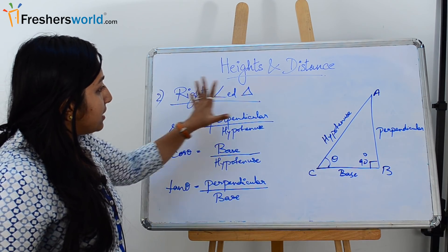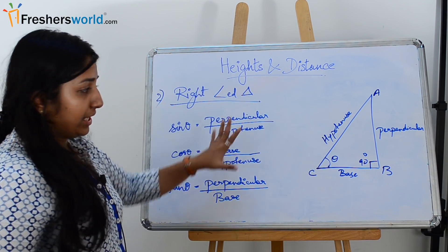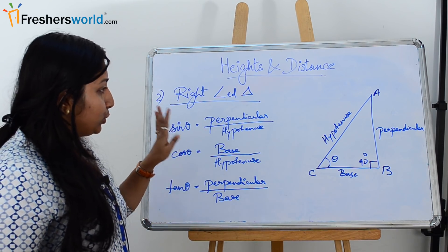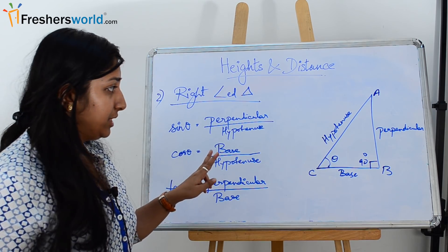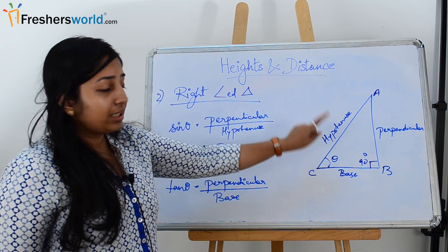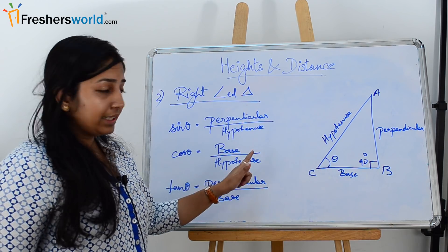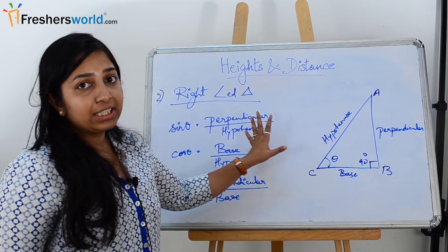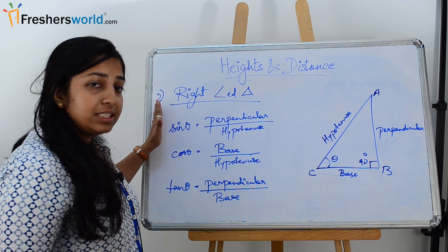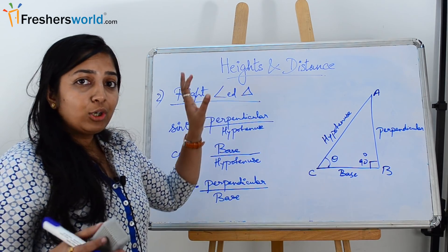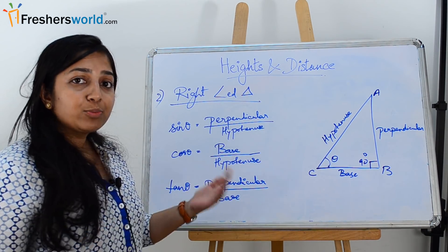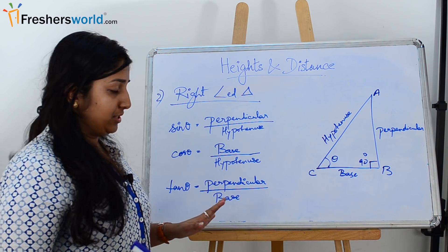Now, going back to the right angle triangle, the three most important things to remember are: first, one angle will always be 90 degrees; second, the sum of all three angles is 180 degrees; and third, the six trigonometric ratios. These three things must always be kept in mind for the right angle triangle. Now let's move on to our next topic — angle of elevation.